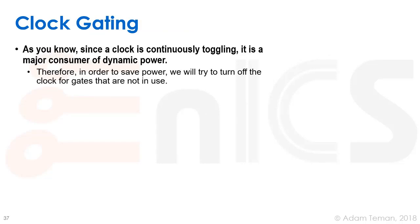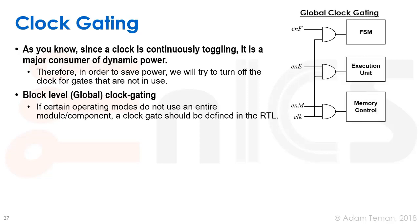A very important point is clock gating. The clock is continuously toggling and has a very high activity factor, so it's a major consumer of dynamic power. Therefore, in order to save power, we will try to turn off the clock for gates that are not in use — and that's called clock gating. There are two ways of doing clock gating.